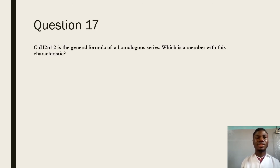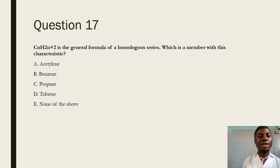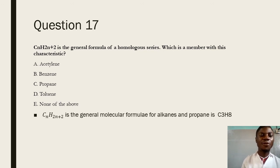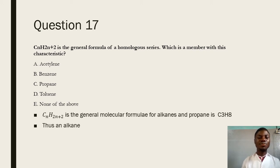Question 17 says: CₙH₂ₙ₊₂ is the general formula of which homologous series? CₙH₂ₙ₊₂ is the general molecular formula for alkanes. CₙH₂ₙ is the general molecular formula for alkenes, and CₙH₂ₙ₋₂ is the general molecular formula for alkynes. For alkanes, the prefix varies depending on the number of carbon atoms while the suffix always ends in -ane. Looking at the alternatives, the answer is C, which is propane.